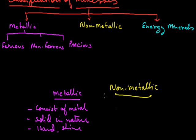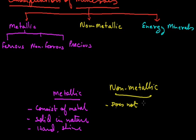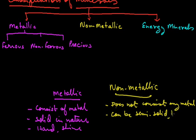Metallic minerals are shiny and ductile. Examples include iron, copper, manganese, aluminium, etc. On the other hand, non-metallic minerals are those minerals which do not consist of metals. They are not necessarily solid — they can be semi-solid, liquid, or even in gaseous form. Examples are coal, petroleum, natural gas, etc.